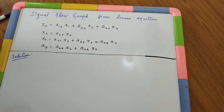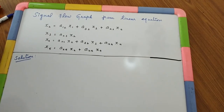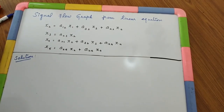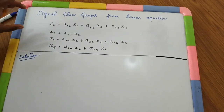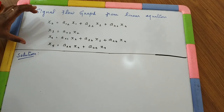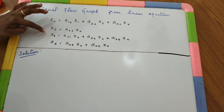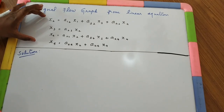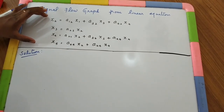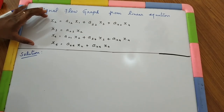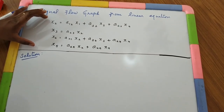In this video, we are going to see how to convert the given linear equation into a signal flow graph. In the given question, there are four sets of equations given. For each equation, one by one, we have to get the signal flow graph, and then finally we have to combine all those four signal flow graphs to obtain a single signal flow graph.